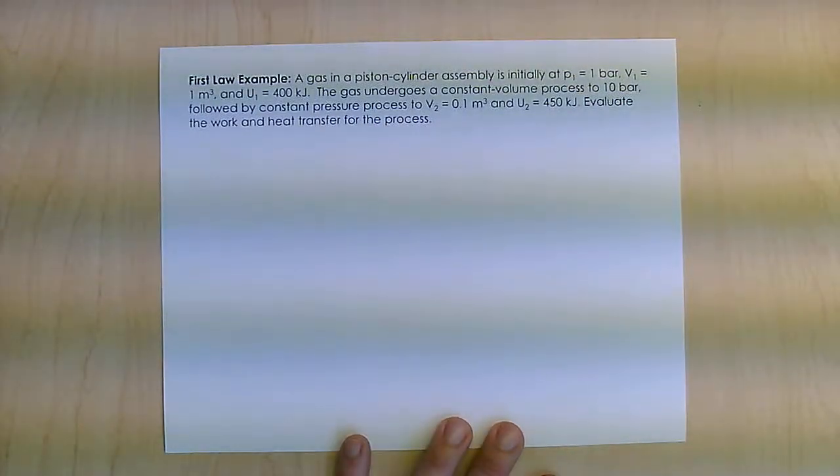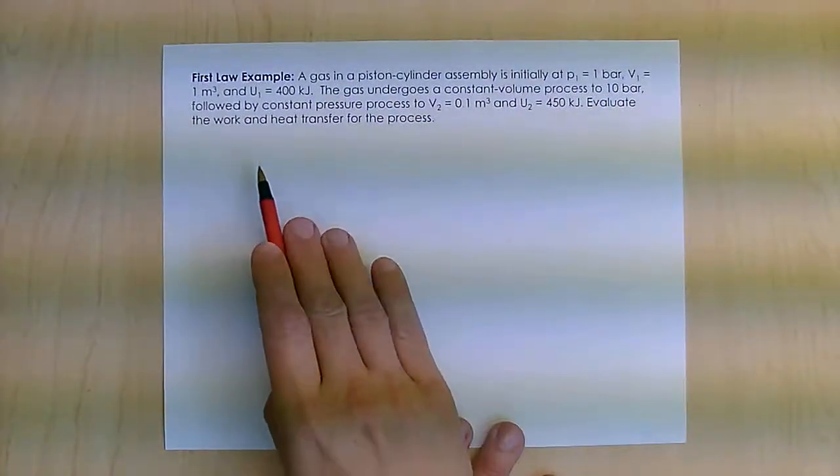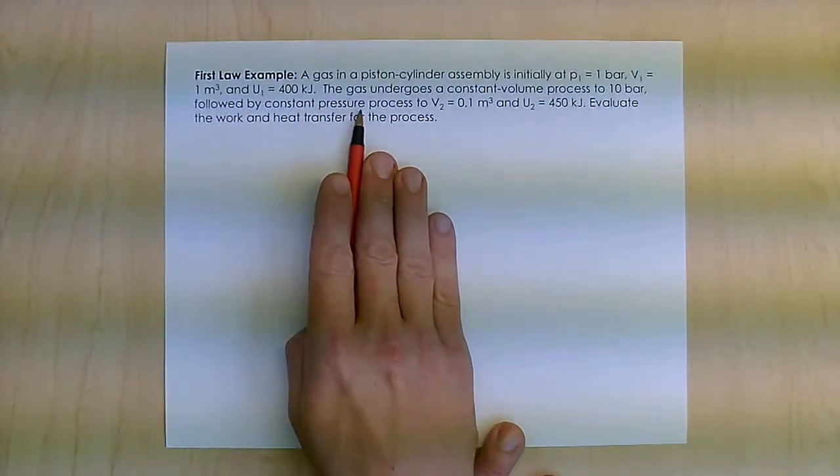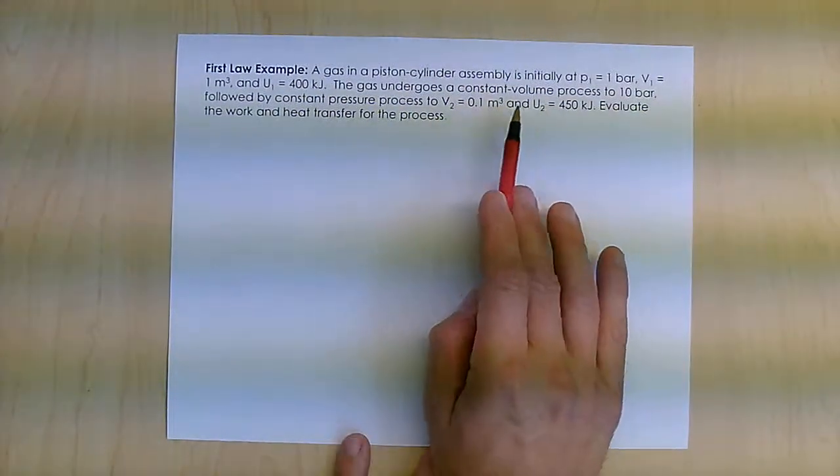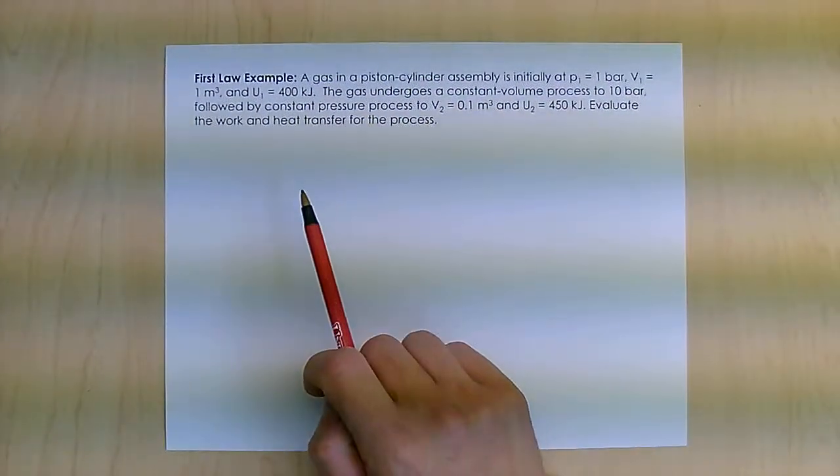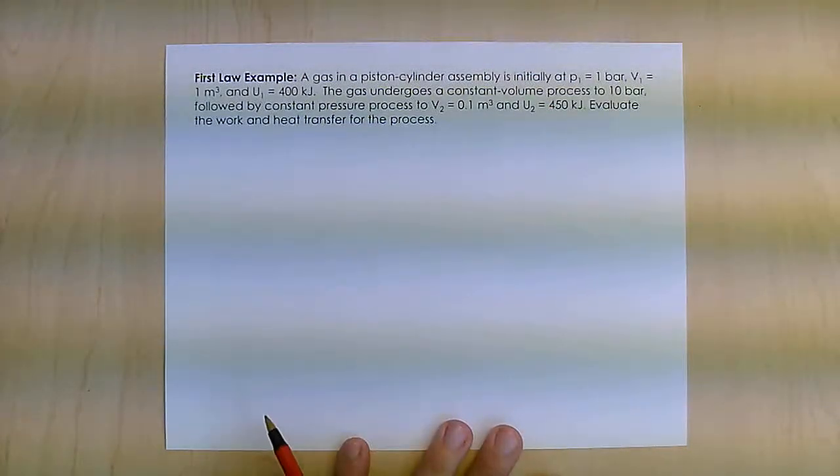The gas undergoes a constant volume process to 10 bar, then stays constant at that pressure to a volume of 0.1 cubic meters and an energy of 450 kilojoules. I want to find the work and the heat for the process.